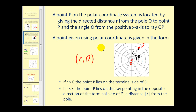A point given using polar coordinates is written in the form R comma theta. If R is greater than zero, point P lies on the terminal side of angle theta. However, if R is negative, the point lies on the ray pointing in the opposite direction of the terminal side of theta.